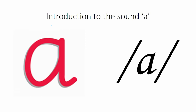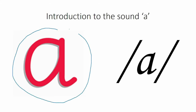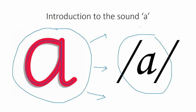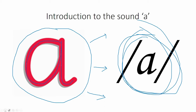क्या आपने ये नोटिस किया कि ये तीनों लफ्ज़ — apple, ankle, और ant — की पहली आवाज़ 'a' थी? इस आवाज़ 'a' की शकल ऐसी होती है जब हम उसको लिखते हैं: round, round, up and down — 'a'. इस sound की आवाज़ है 'a' — apple, ant, ankle. a, a, a.